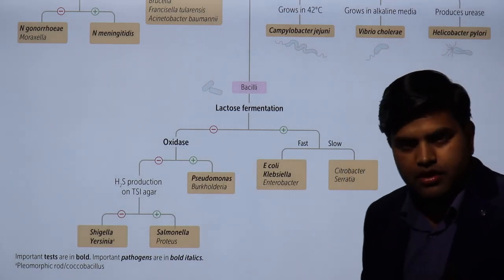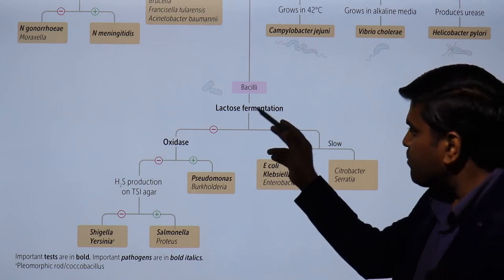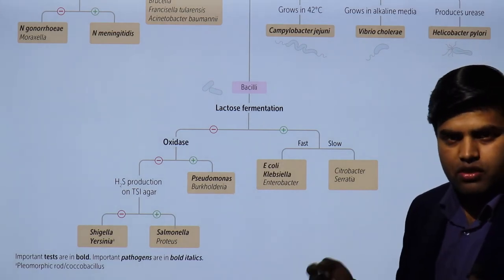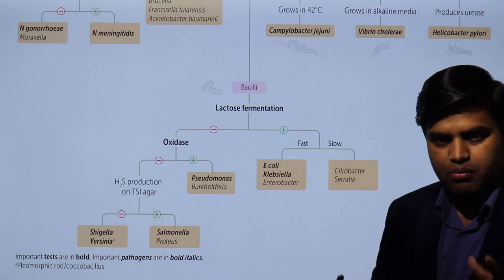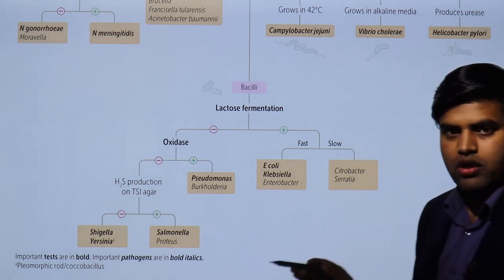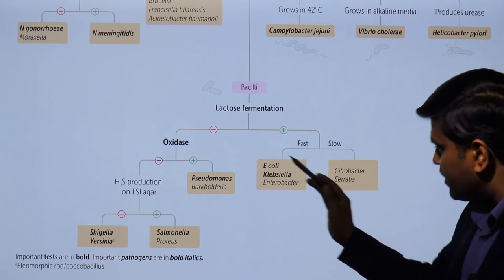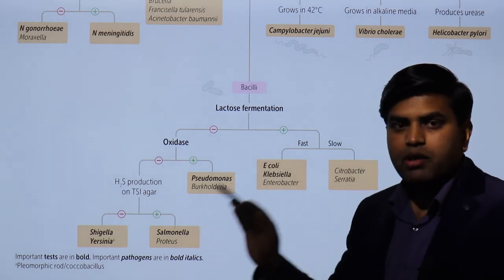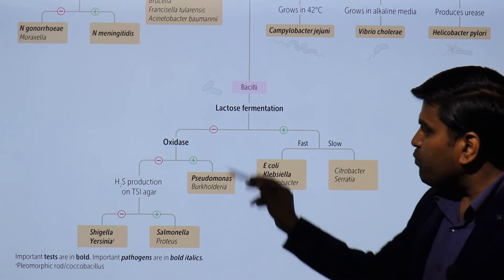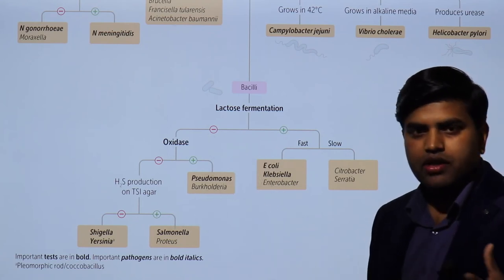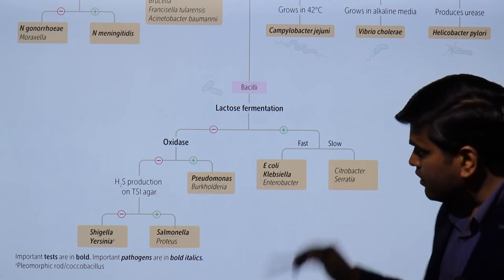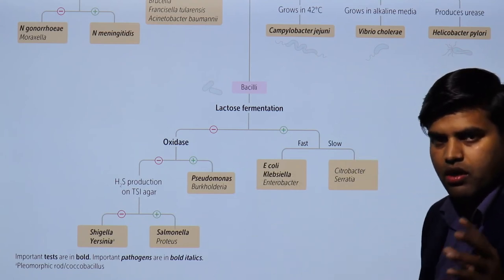Certain organisms remain pale or colorless on MacConkey agar despite the presence of lactose, because they cannot ferment lactose. Since they cannot ferment lactose, they do not produce acid, so the media pH does not change and the indicator does not change. These pale or colorless organisms are: Pseudomonas, Burkholderia, Salmonella, Proteus, Shigella, and Yersinia.